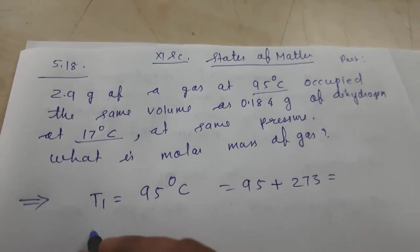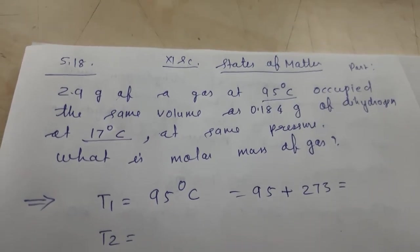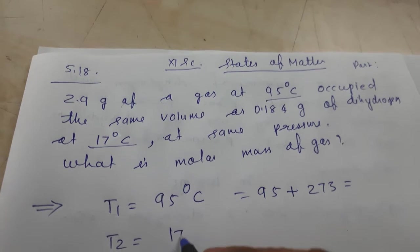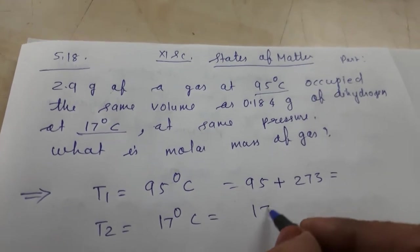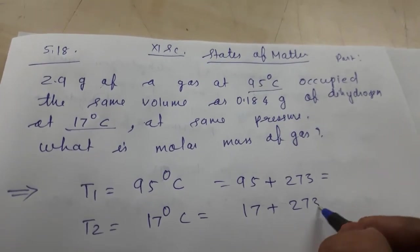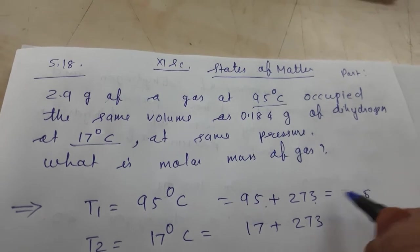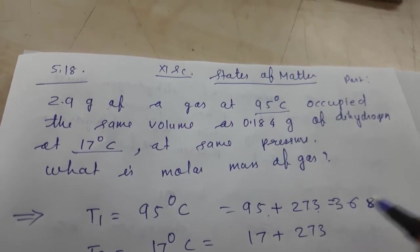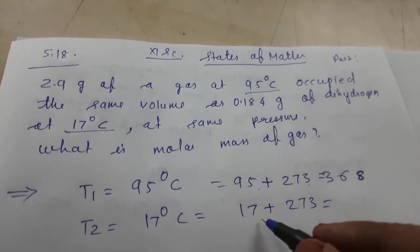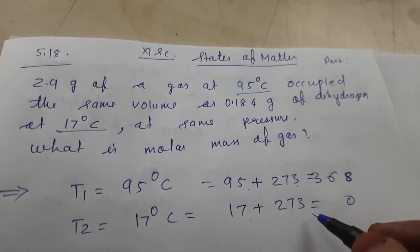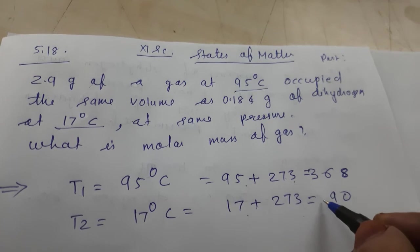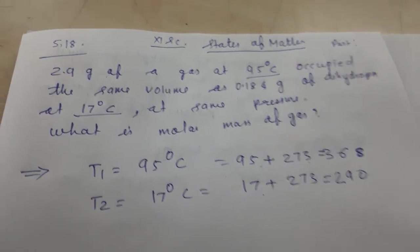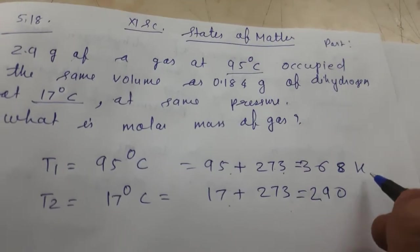Then T2 equals 17 degrees Celsius, which equals 17 plus 273. So 5 and 3, 8, equals 368 Kelvin. And this will become 290 Kelvin. This is Kelvin, we have converted to Kelvin.